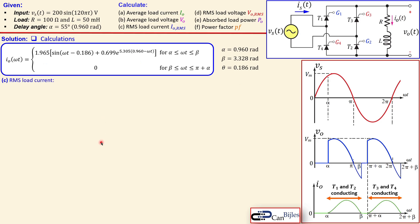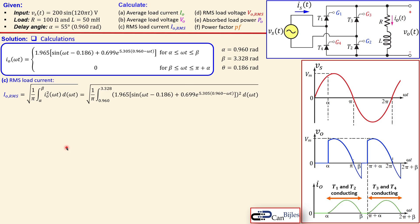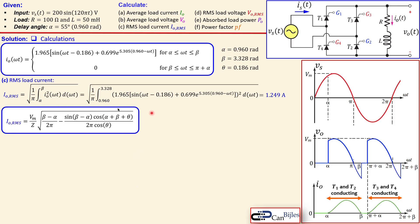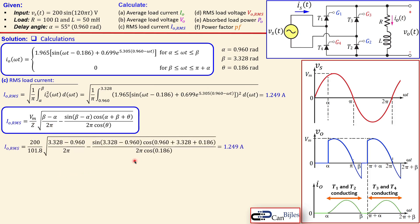The RMS load current (question c) uses the definition: the square root of (1/π) times the integral from α to β of the squared load current expression. Evaluating this with a solver gives 1.249 amps. A faster shortcut formula using Vm, Z, β, α, and θ also yields 1.249 amps, confirming the result.